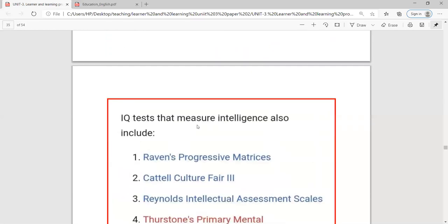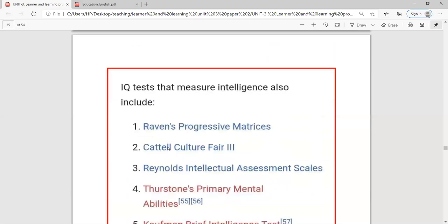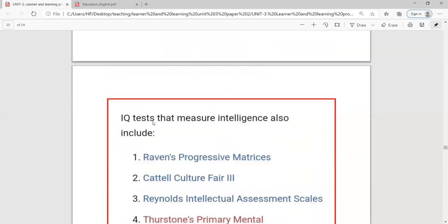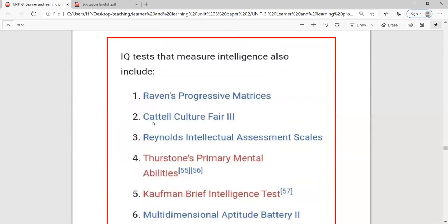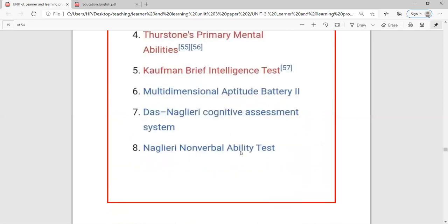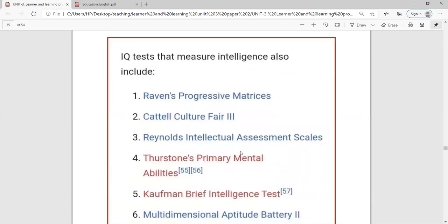Now let's move on. IQ test that measures intelligence also includes other tests. This is just the IQ test of Simon's IQ test of MA by CA into 100. There are also many different ways. I will give you a name here. To test IQ, Raven's Progressive Matrices, Cattell's Culture Fair 3, Reynolds's Intellectual Assessment Scales, Thurstone's Primary Mental Abilities, Kaufman Brief Intelligence Test, Multi-Dimensional Aptitude Battery 2, Naglieri Cognitive Assessment, Naglieri Nonverbal Ability Test. This is the name of IQ test.